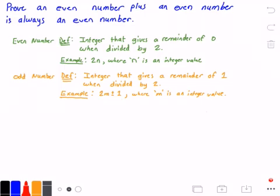Now we won't be needing that definition for this video proof, but it's just good to know the definition of an odd number in general for maybe other proofs.